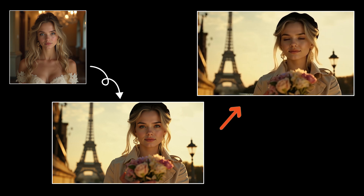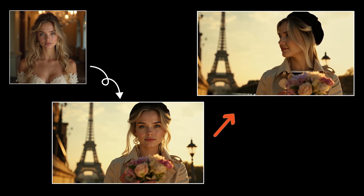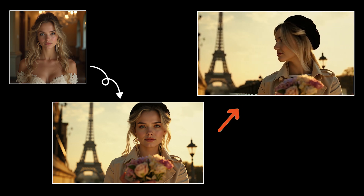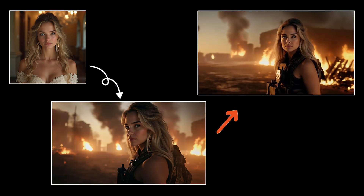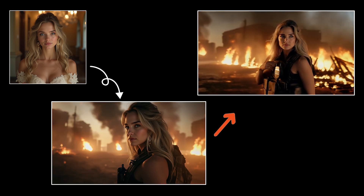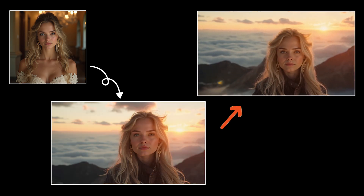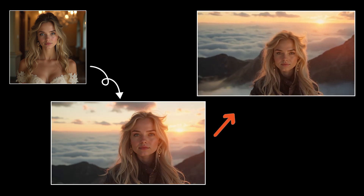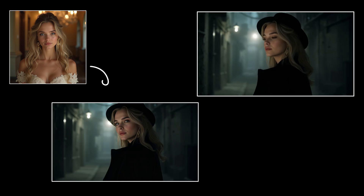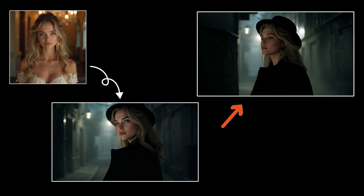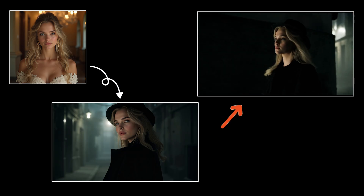Halo AI has made it much easier to create consistent characters. With the new image-to-image feature, you can keep the same look and style in every scene using just one reference photo. This means that creating videos or stories with consistent characters is now much easier. Let me show you how it works.